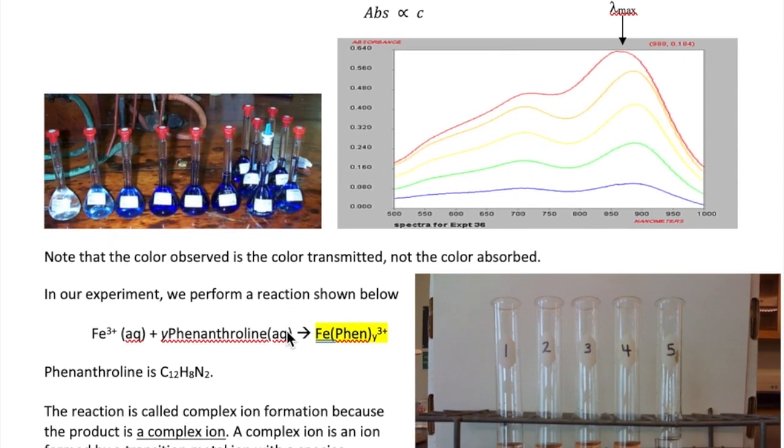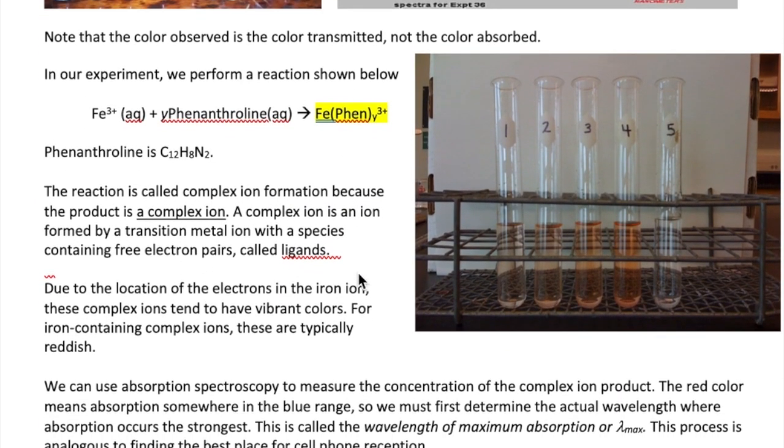Okay, so now that we know that absorbance values reflect the concentration of a substance, we can go back to our experiment and describe how we will measure how much product we'll make. In our experiment, we will carry out a reaction between iron-3-ion and a compound called phenanthroline, which has a formula C₁₂H₈N₂. In this reaction, a specific number of phenanthroline binds to the iron ion, forming what's called a complex ion, which is highlighted in yellow.